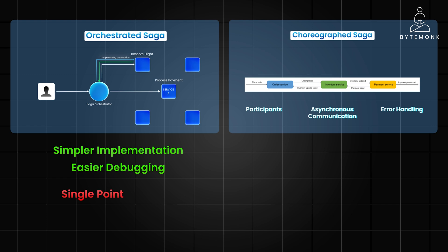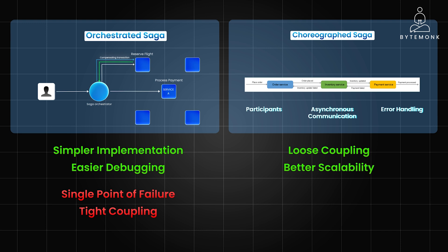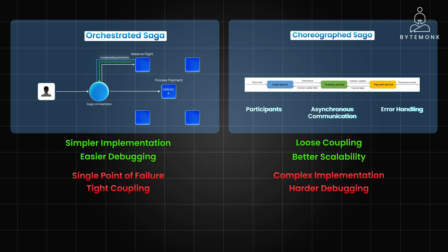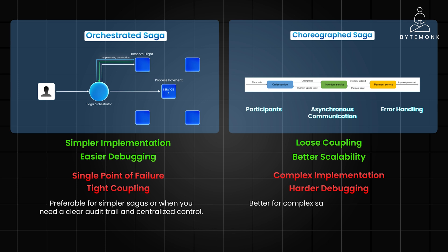However, if the orchestrator fails, the entire saga can get stuck, and services become highly dependent on the orchestrator. In choreography, services are more independent and less reliant on a central coordinator, so it can scale more easily as there is no central bottleneck. However, it's a complex implementation — services need to understand the events and how to react to them, leading to more complex code, and tracing the flow of a choreographed saga can be much more difficult. Orchestrated saga is preferred for simpler sagas or when you need a clear audit trail and centralized control, whereas choreographed sagas are better for complex sagas with many services or when you need high scalability and loose coupling.